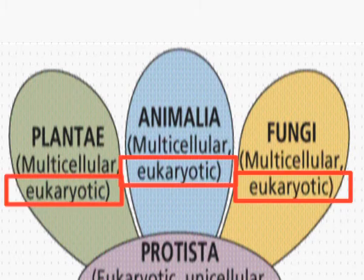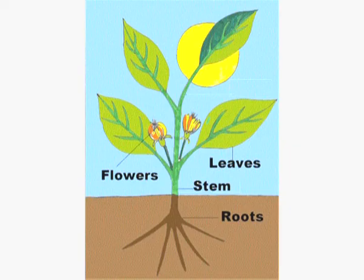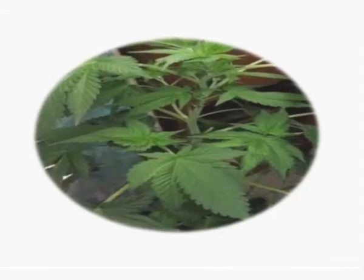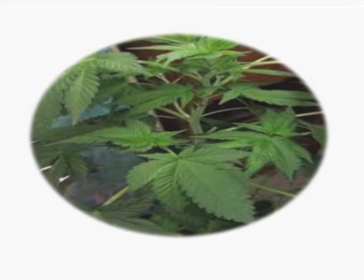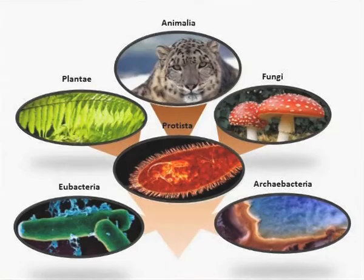Initially, Fungi were placed along with Plantae, but because they are not differentiated into the three distinct regions — root, stem, and the plant body — there is no differentiation of the plant body, and therefore they were grouped separately into Kingdom Fungi. Plantae can manufacture their own food, while animals are heterotrophs. So Whittaker grouped these organisms into five kingdoms.